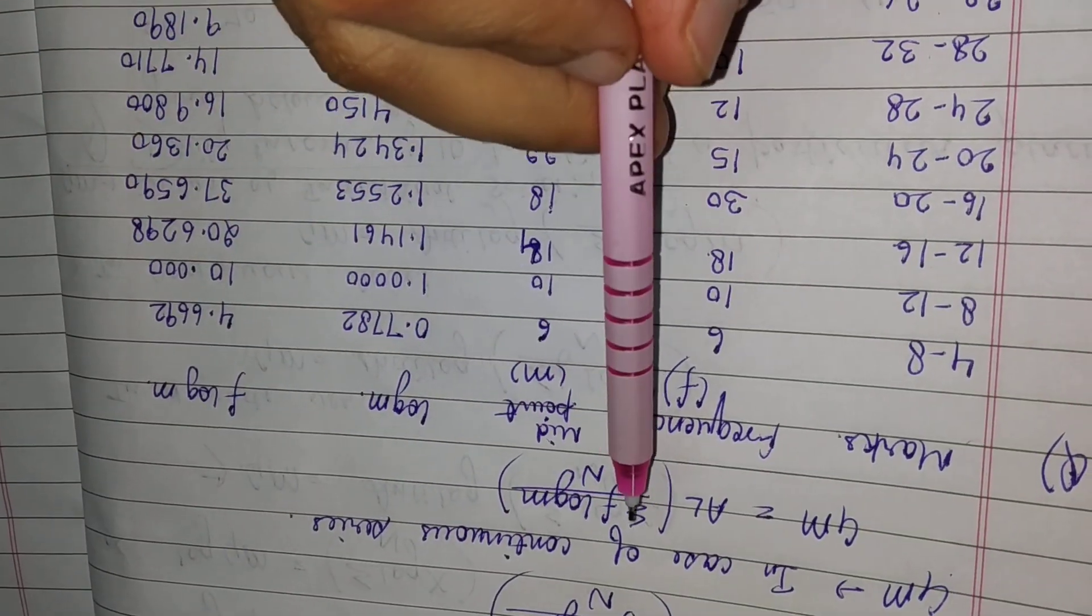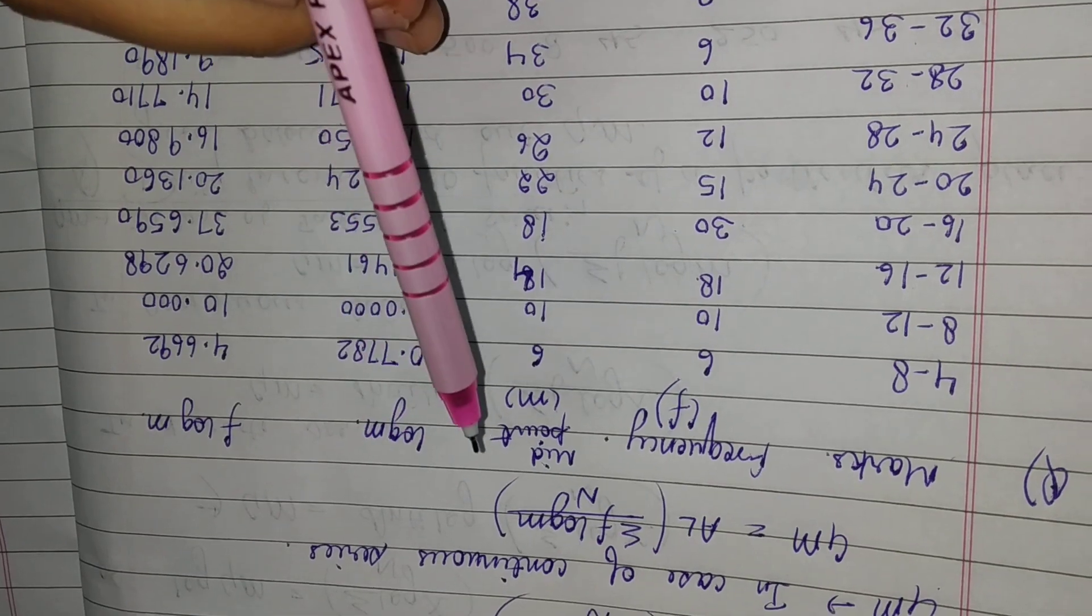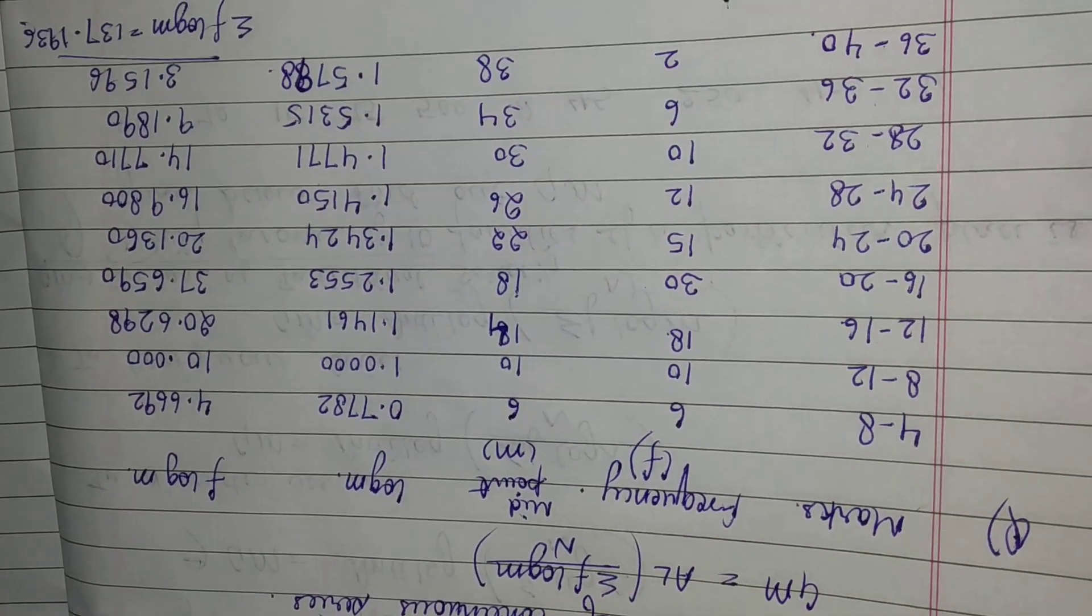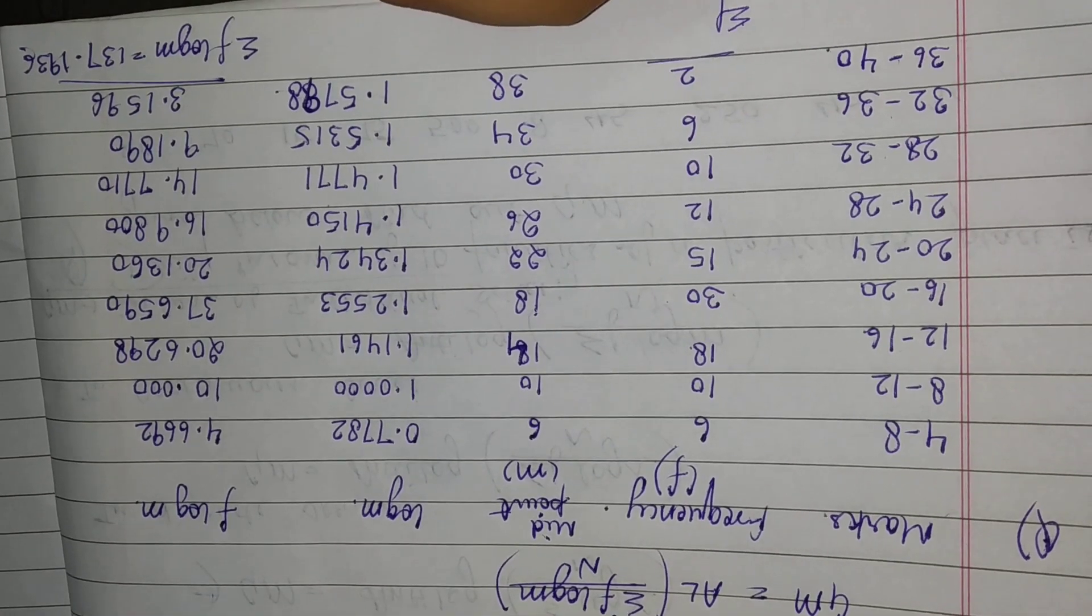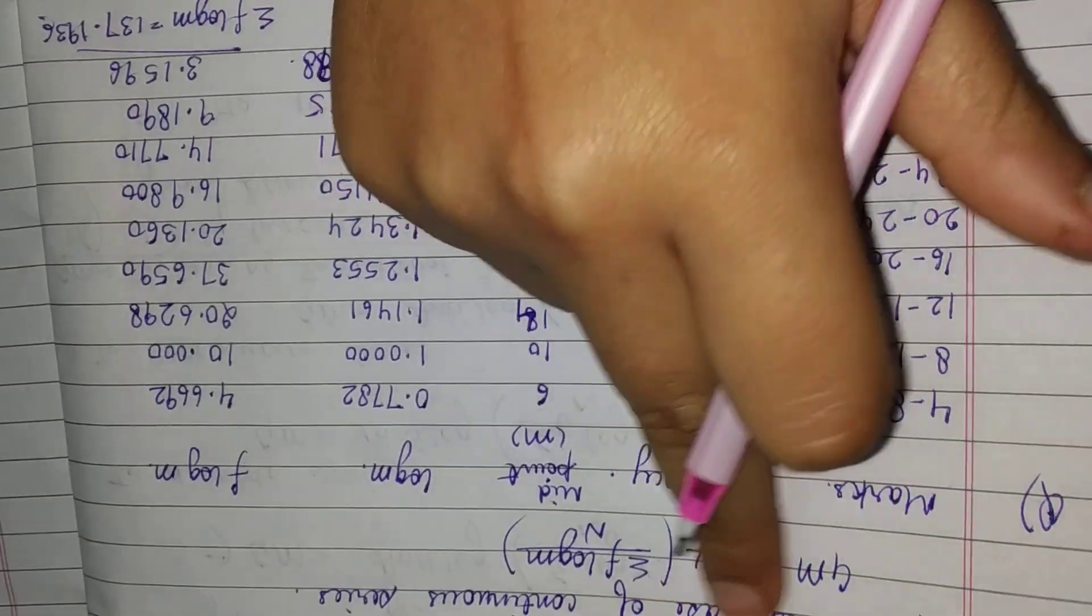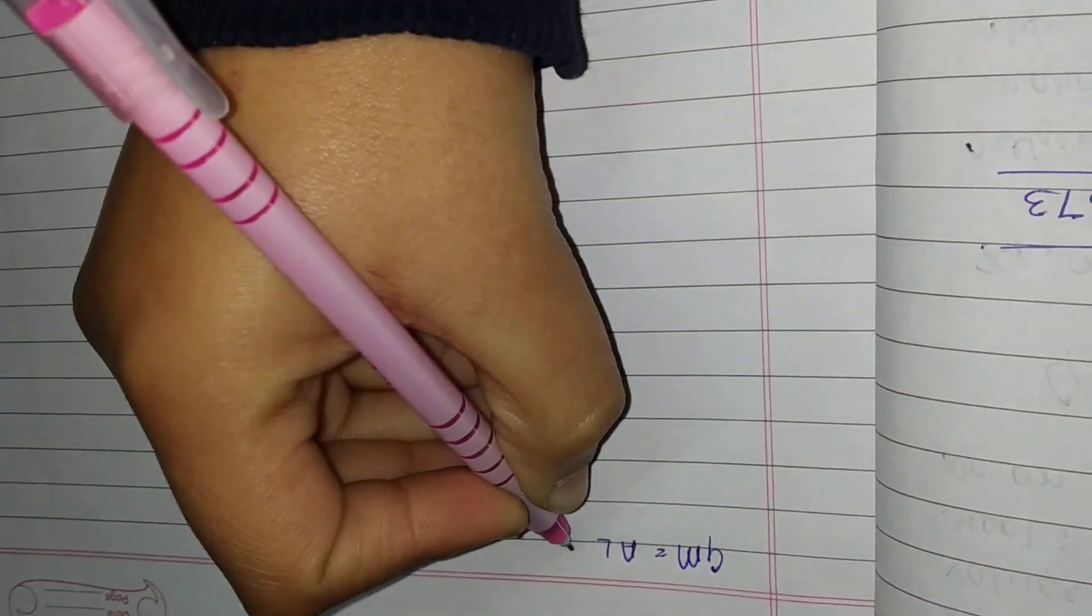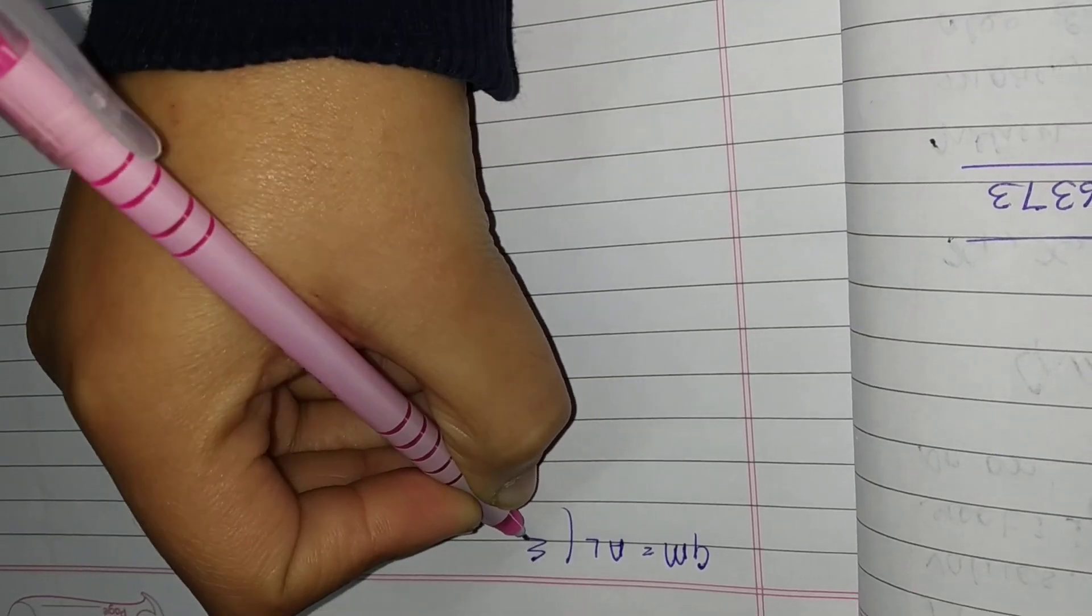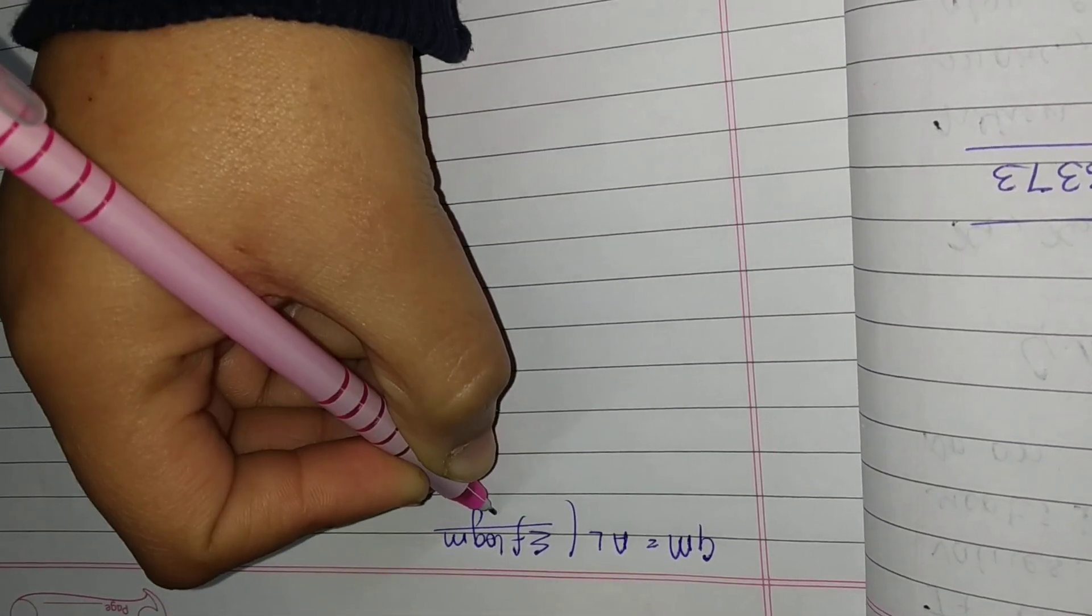In the formula we need n also. To find n, we do the summation of frequency. After summation we get 109. Now we'll put these values in the formula and get the geometric mean. Therefore, geometric mean equals antilog of summation f log m upon n.